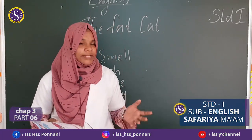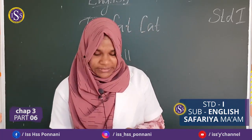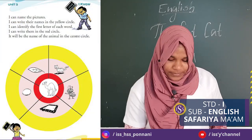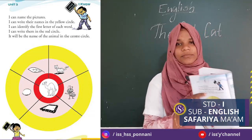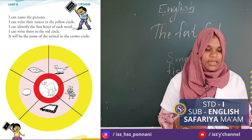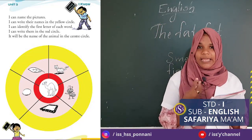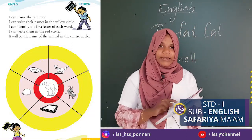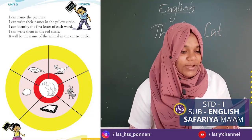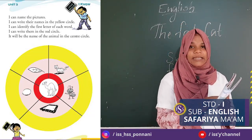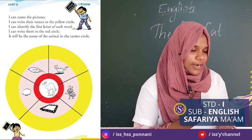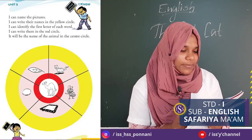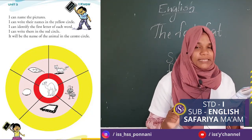All of you write this verse in your notebook five times. Then here we have an activity. You have to do simply page number 68. Here we can see a picture. I can name the picture. I can write their names in the yellow circle. I can identify the first letter of each word. I can write them in the red circle. It will be the name of the animals in the center circle.